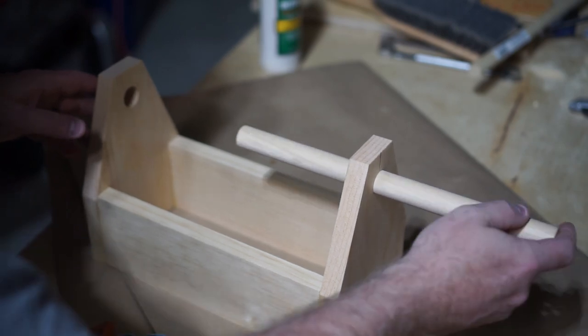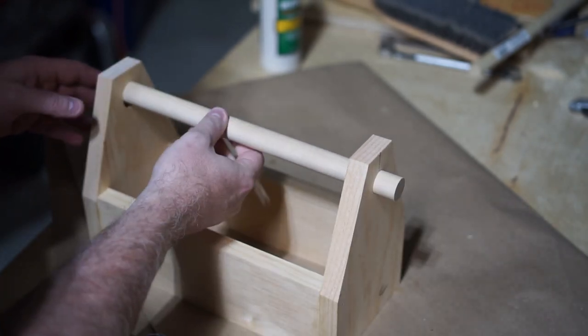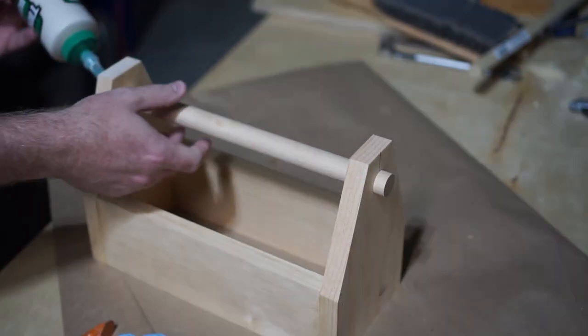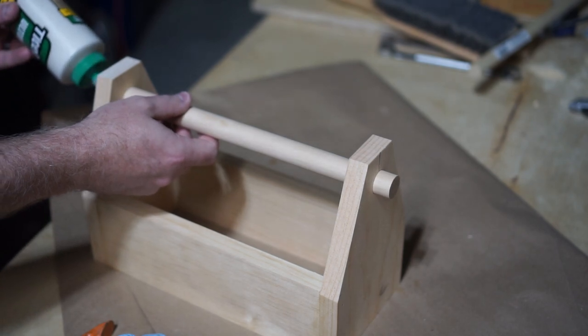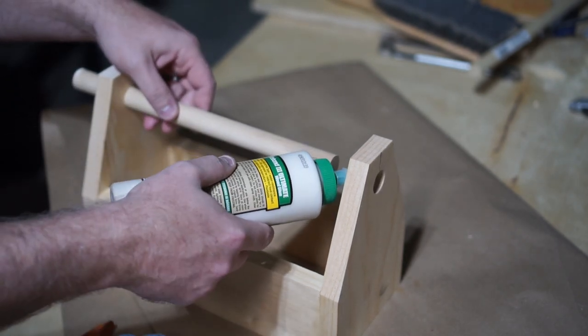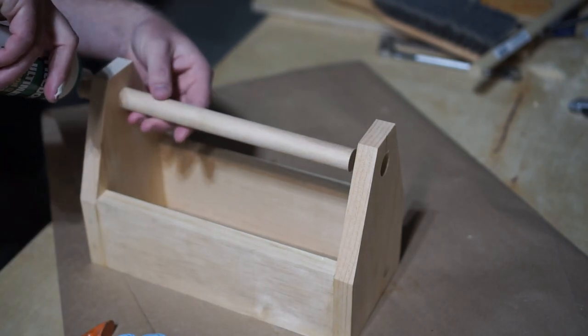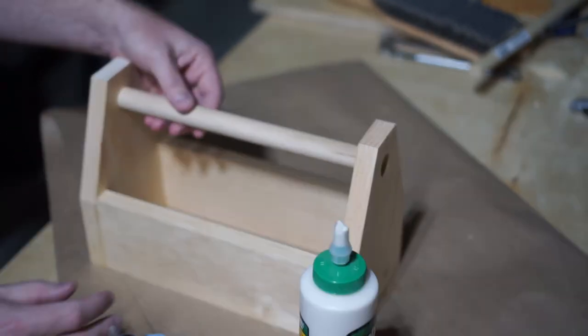All I used to secure the dowel as a handle was wood glue. I found it easiest to put the dowel all the way through first and then apply a little bit of glue inside the hole and around the dowel. Smear it around and stick it back in.